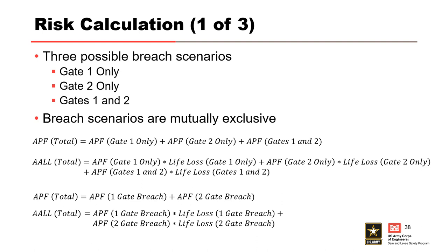The total annual probability of failure equals the APF of a gate one only failure, plus the APF of a gate two only failure, plus the APF of a failure of both gates. To calculate the average annual life loss, we do the same thing but add consequences for each breach scenario. For our example, the consequences of a gate one only breach are the same as the consequences of a gate two only breach. Therefore, we can simplify the equations by accounting for a gate one only failure and a gate two only failure within one term for a one-gate breach. The total APF equation is then equal to the APF for a one-gate breach plus the APF for a two-gate breach.